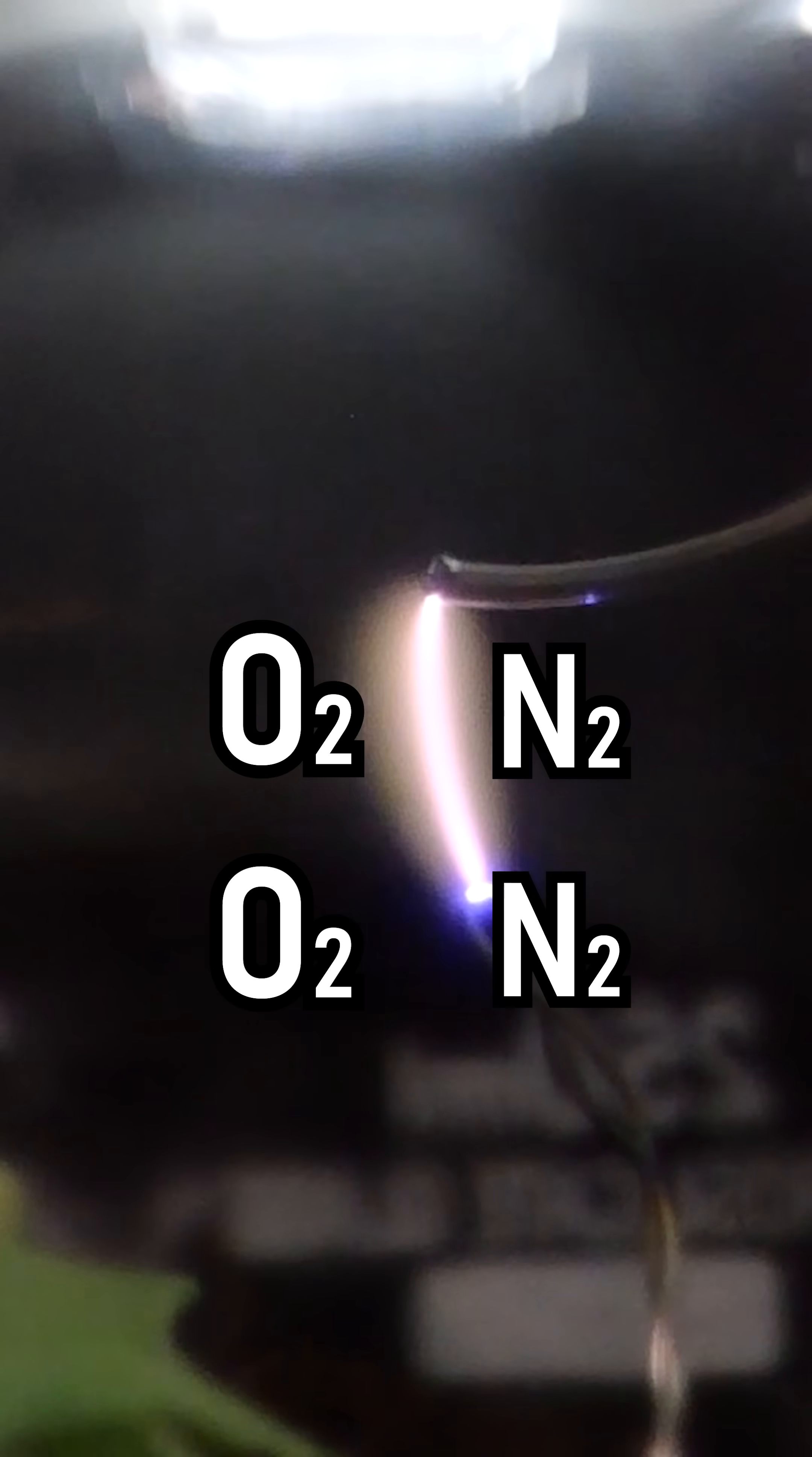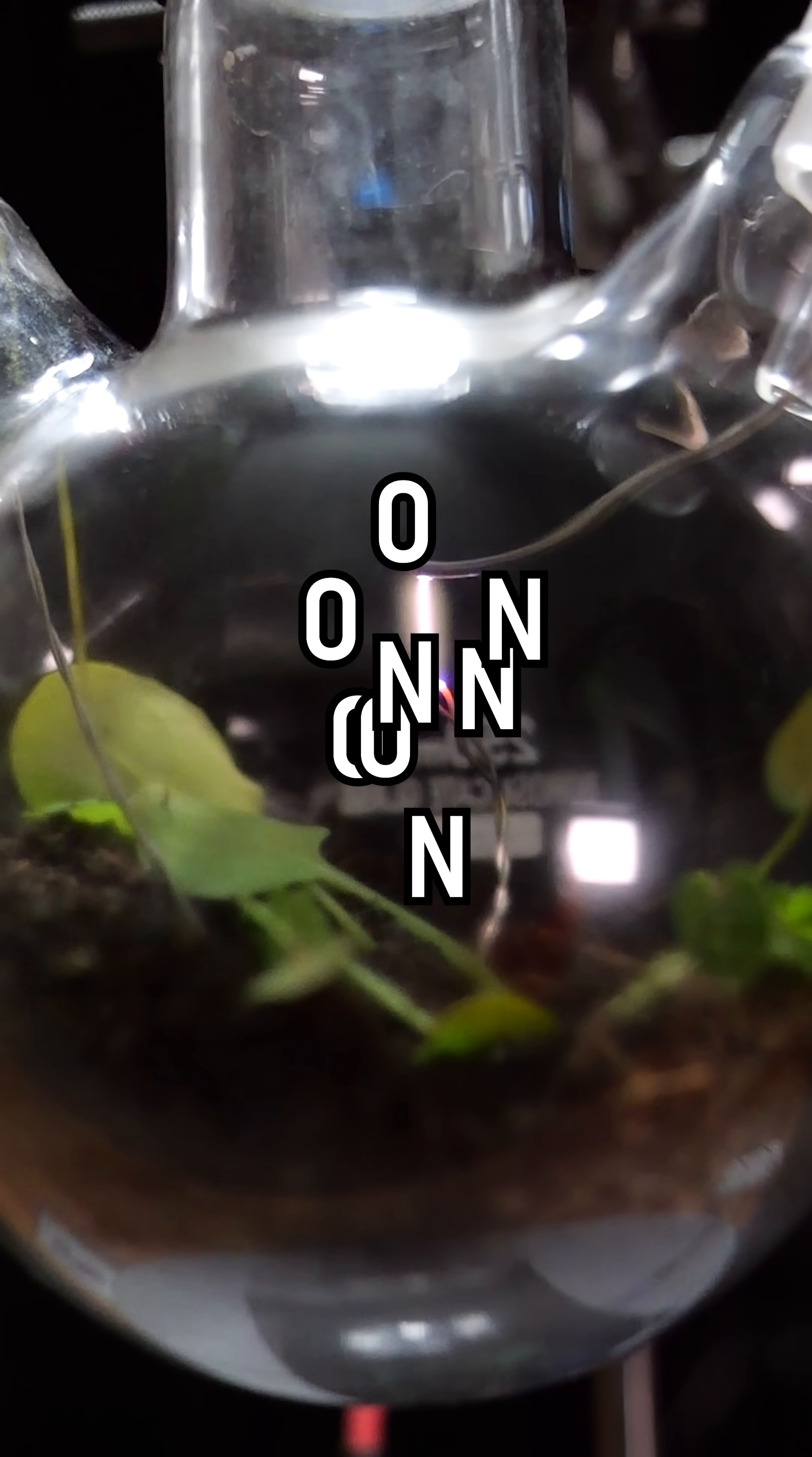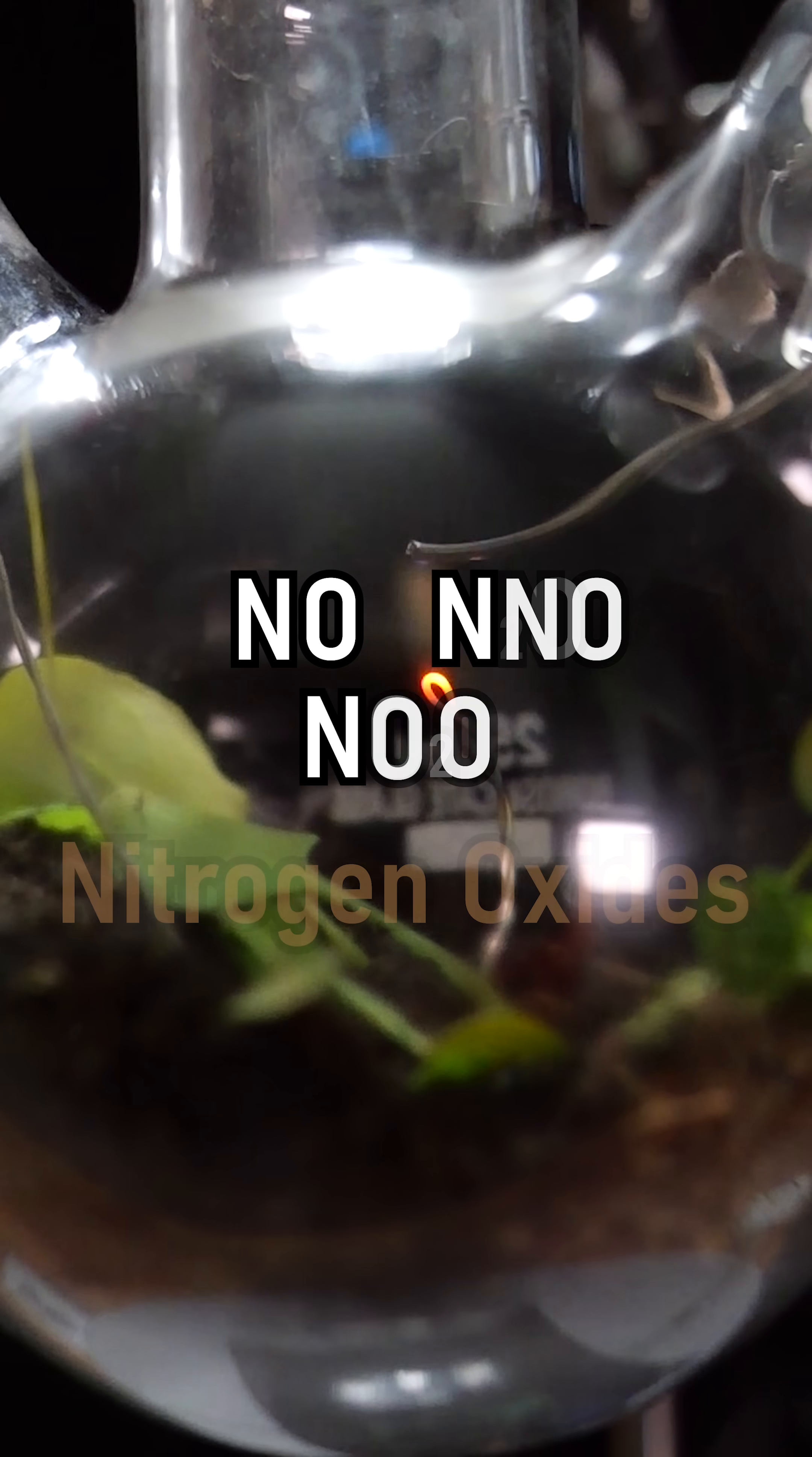Up close you may have noticed it's ripping apart the air molecules, specifically nitrogen and oxygen. These sometimes recombine, forming new brown chemicals called nitrogen oxides.